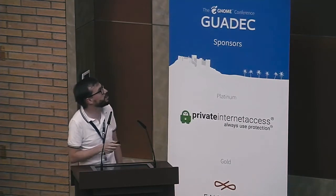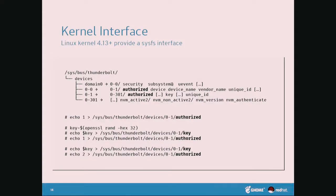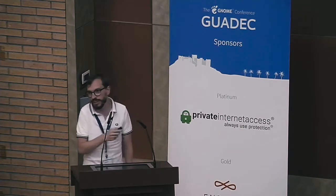The kernel interface is a very simple SysFS interface with device files. To authorize a device, you just write a one into a file called 'authorized' for that device. If you want to do key verification in secure mode, there's a file called 'key' where you write a random key into the device file, engrave the key via the authorized flag, and on subsequent connects you provide the key and it connects only if the key matches the one stored in the device.